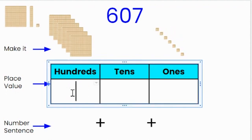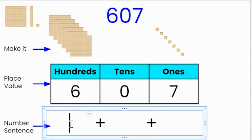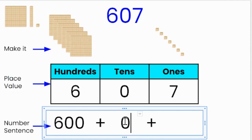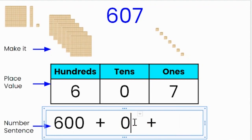When I write in the place value chart, I will write six hundreds, zero tens and seven ones. When I write my number sentence, I know that six hundreds is six hundred, zero tens is zero, and the ones are seven. So six hundred plus zero plus seven equals six hundred and seven. Because there are zero tens, I could even just write six hundred plus seven equals six hundred and seven.